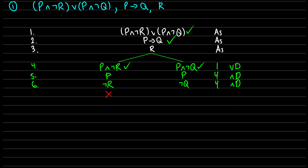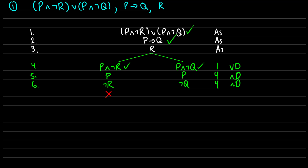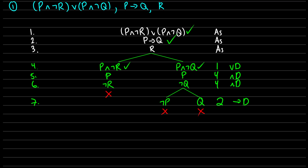So we have P arrow Q. Remember, if we have P arrow Q, either not P is true or Q is true — that's the meaning of it. So we split that into two branches: on the left side we have not P, and on the right side we have Q. This comes from line two and is conditional decomposition, occurring in line seven. At this point we have contradictions: not P and P on one side, and Q and not Q on the other. So we close both of these branches.